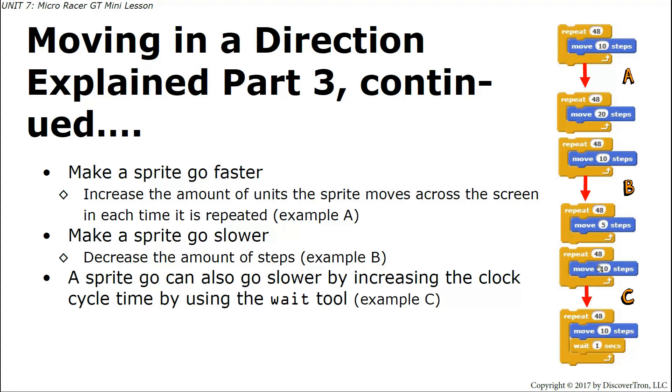You can also slow things down by putting in a wait block. For example, on C, this sprite's moving 10 steps in a loop of 48 times. Down here the repeat loop is 48 times. We're still moving 10 steps but we put this wait right here. That causes the program to slow down a little bit by adding some extra time to the calculation of the movement.